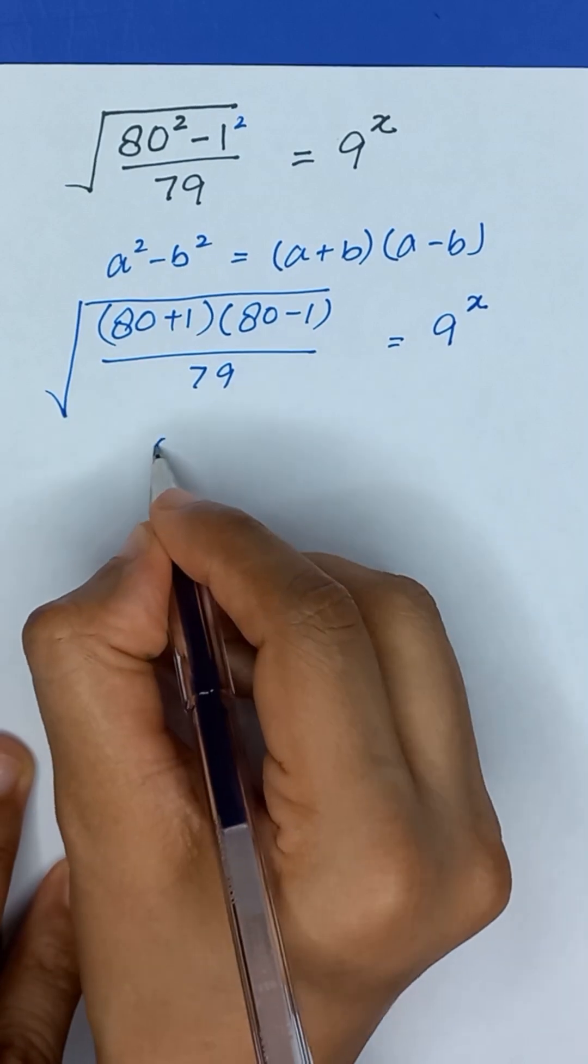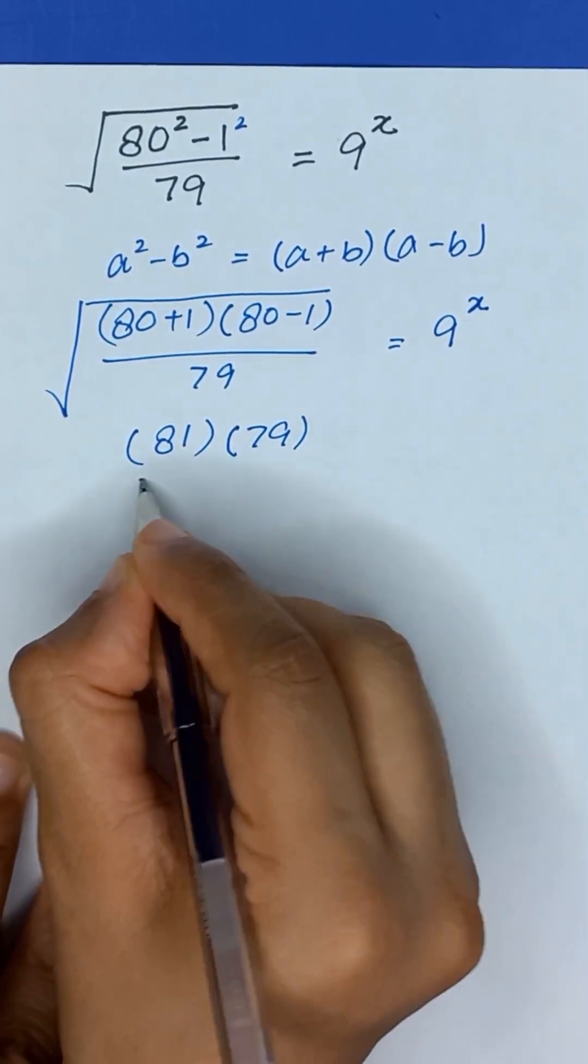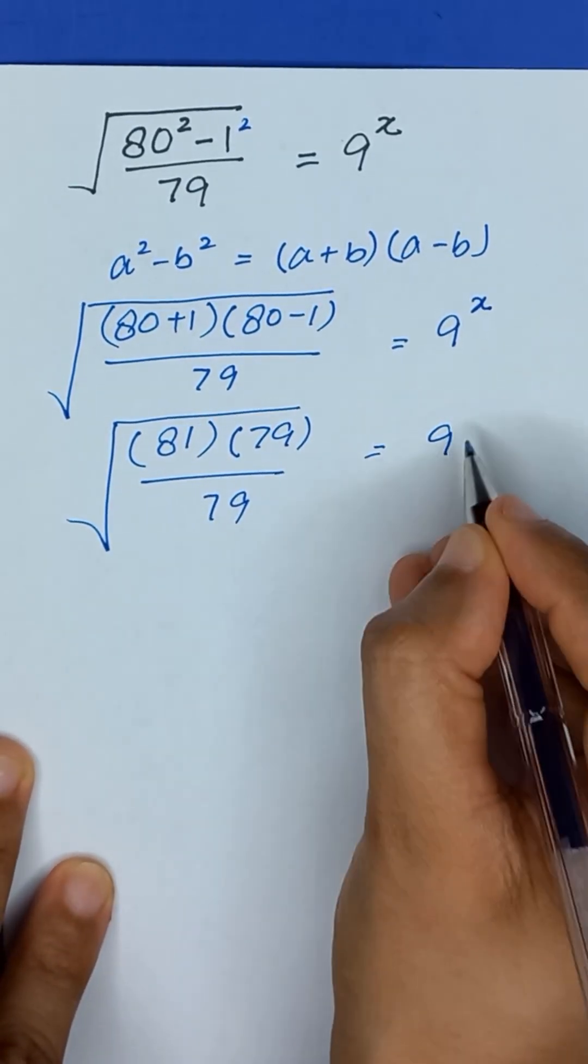So it will become 80 plus 1 will be 81, times 79 divided by 79, and its square root is equal to 9 to the power x.